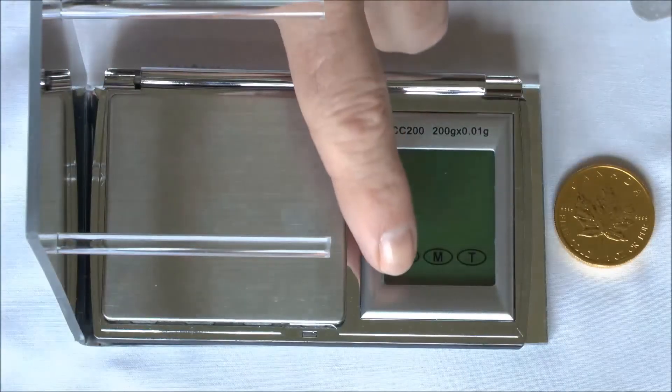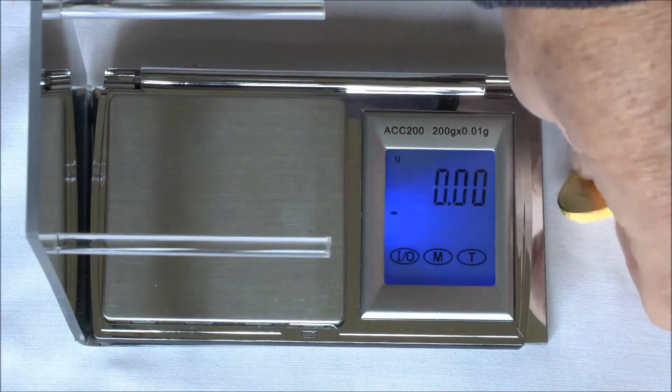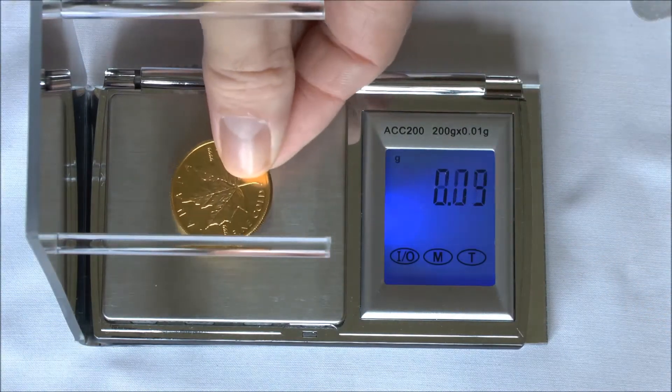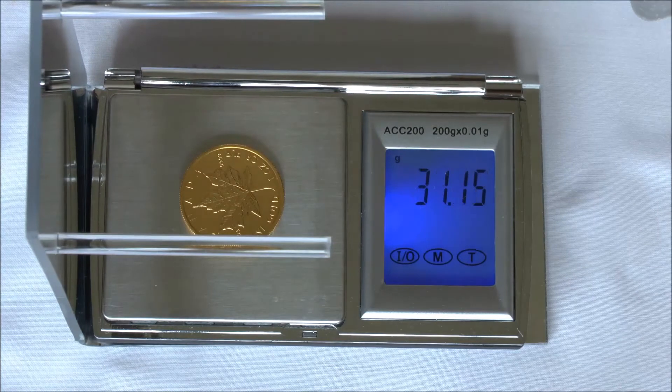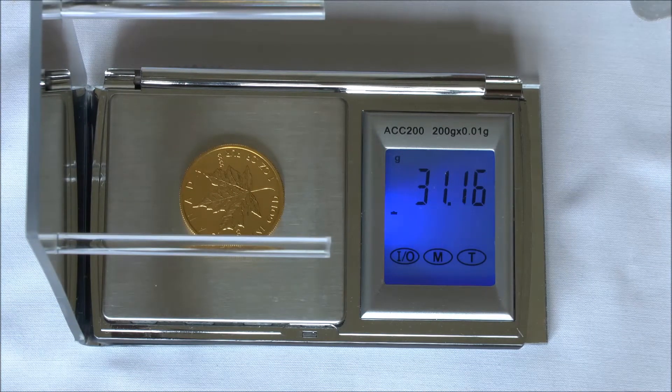First, we're going to get the dry weight of our gold piece, and we're going to write it down. Here we have 31.16.